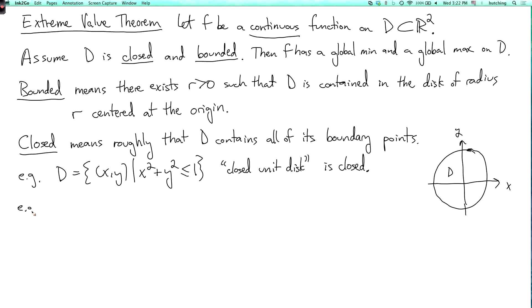Now, if instead we take D to be the set of x, y such that x squared plus y squared is strictly less than 1, and this is called the open unit disk. This is not closed.